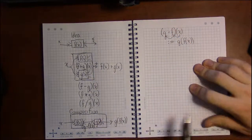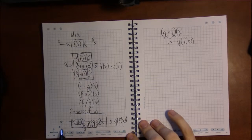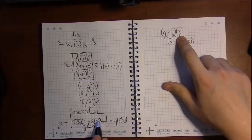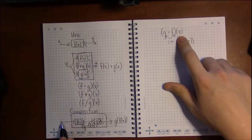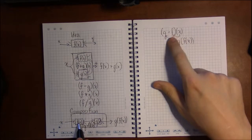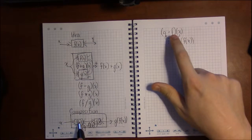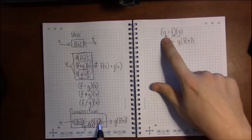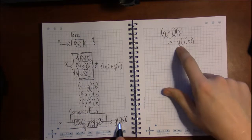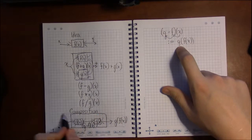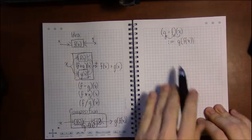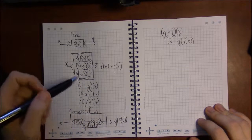So we're going to define for this operation, we're going to define this to be g of f of x. We're going to define this notation to capture this idea, that we can string two functions together, so that the input of the whole goes into the first function, f, then the output of f goes into g, and that output is going to be the output of our new function, this composed function.